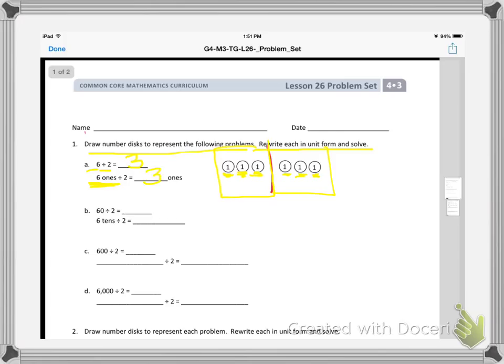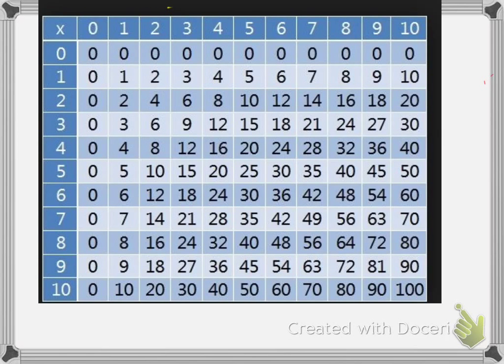I want to show you how you can find the same answer on the multiplication chart. On the multiplication chart, we go across the 2 row. When I look across the 2 row, I'm looking for the place where the answer is 6. Here is a 6.